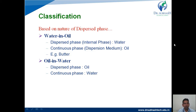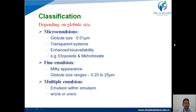The ideal example of a water-in-oil emulsion is butter. In oil-in-water emulsion, the dispersed phase or internal phase is oil, and the continuous phase or external phase is water. These are the two main types based on the dispersed phase.